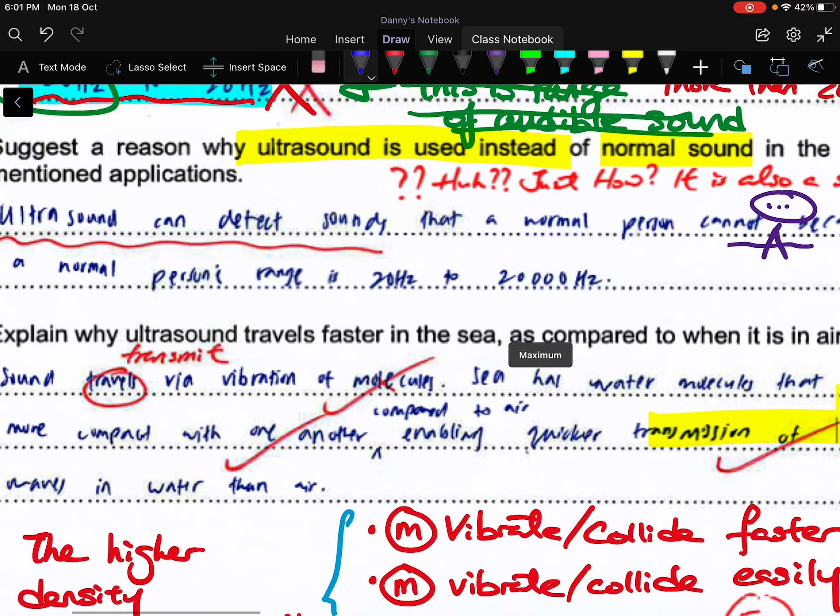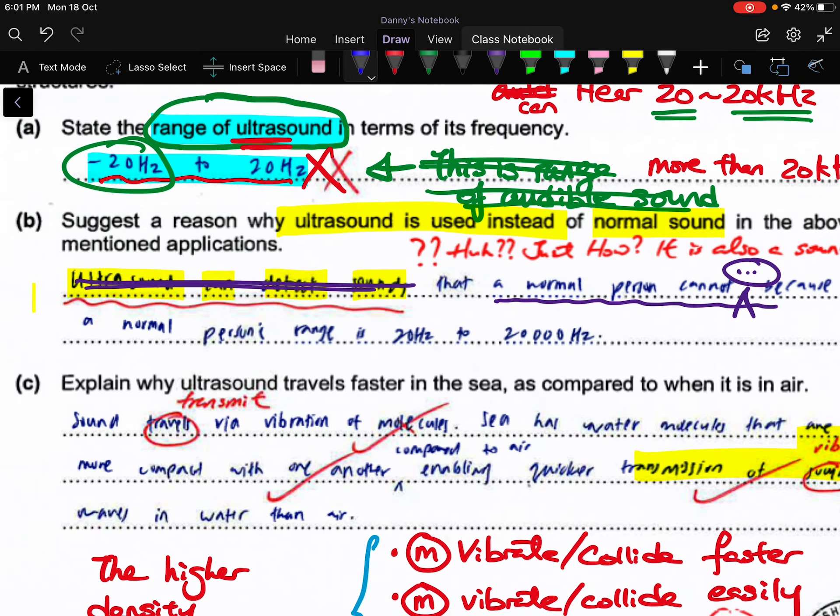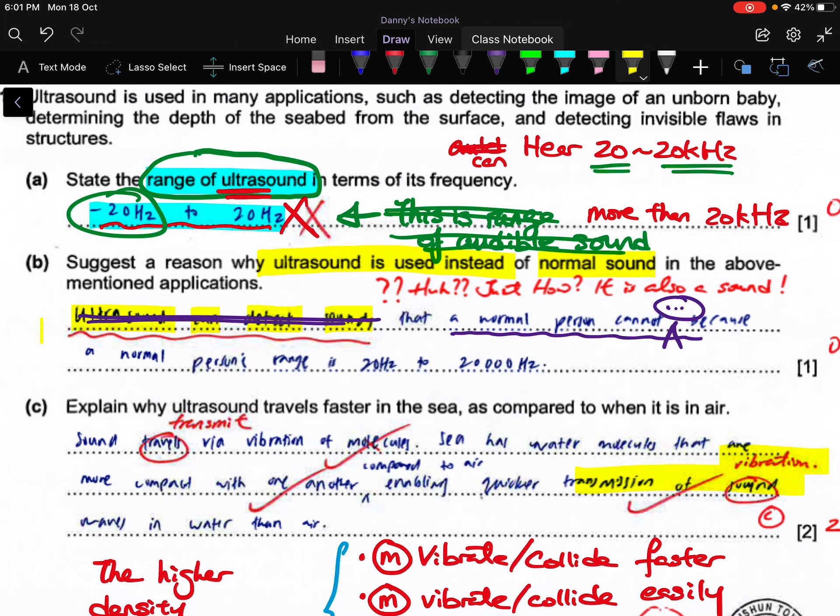For part c, you are supposed to explain why ultrasound travels faster in sea compared to when it is in air. First of all, in your explanation you need to point out to me that the density of sea is actually greater than in air. You can see the student getting the two full marks. She rightfully points out the key difference in terms of physics terms: sea has water molecules that are more compact with one another compared to air. I think what she's trying to say is water molecules that are arranged in a more compact way than one another, therefore enabling a quicker transmission of not sound but vibration. Here I condone the error.